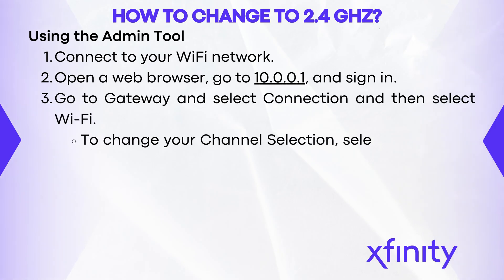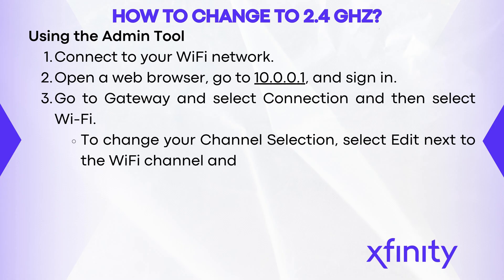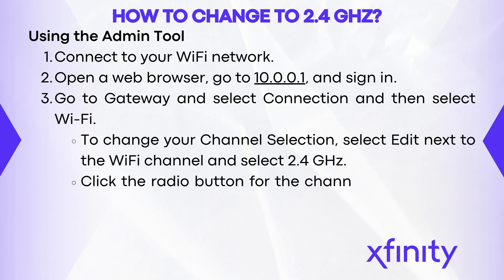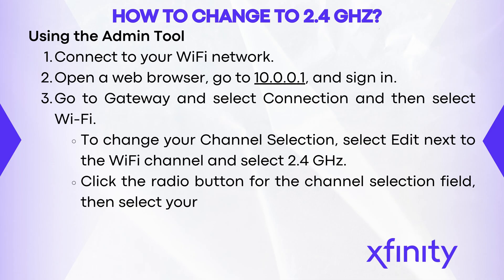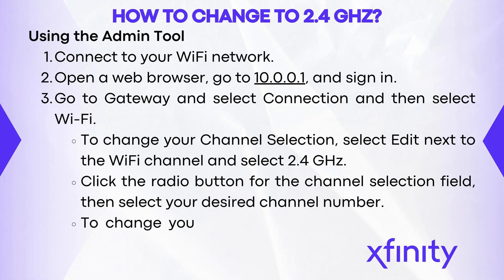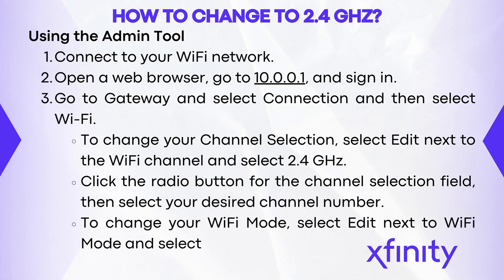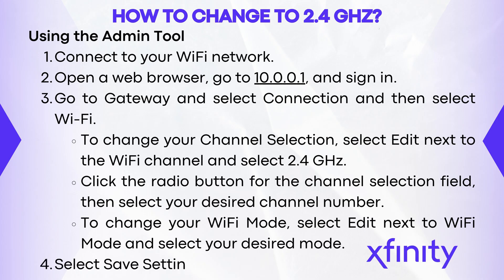To change your channel selection, select Edit next to the Wi-Fi channel and select 2.4 GHz. Click the radio button for the channel selection field, then select your desired channel number. To change your Wi-Fi mode, select Edit next to Wi-Fi mode and select your desired mode.